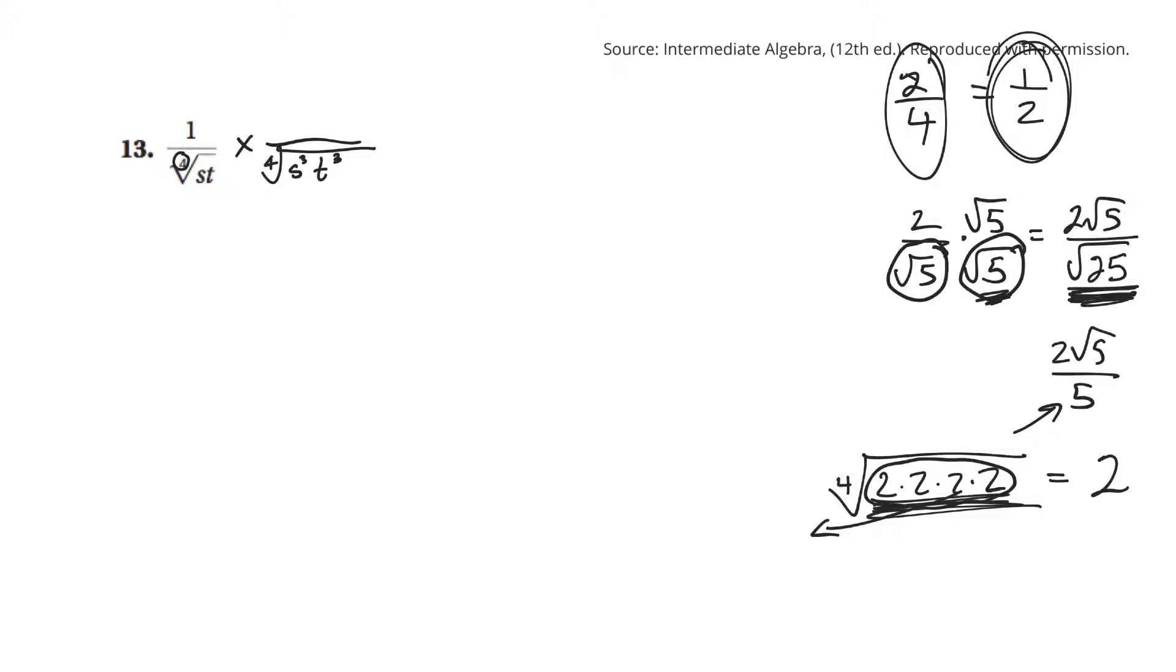And if I do that on the bottom, I've got to do that on the top. So, I'm going to end up with the 4th root of s cubed, t cubed on top.